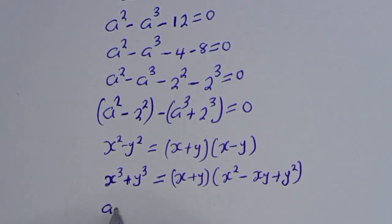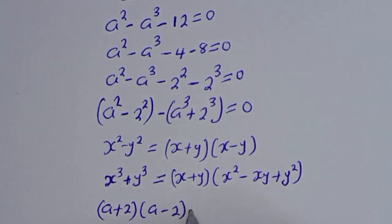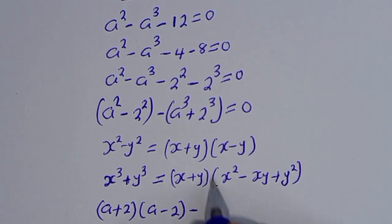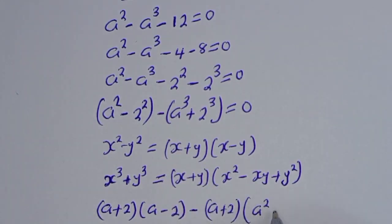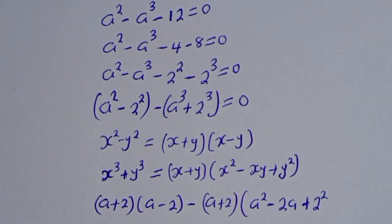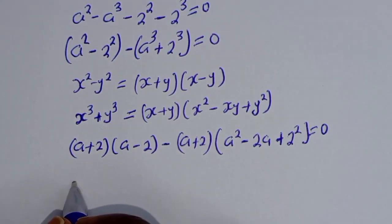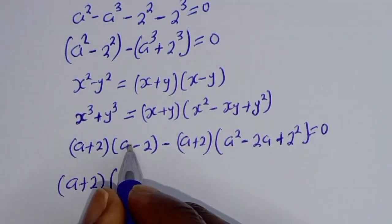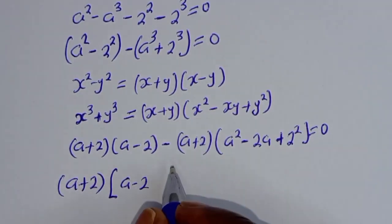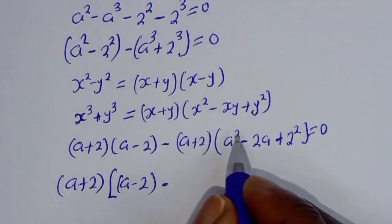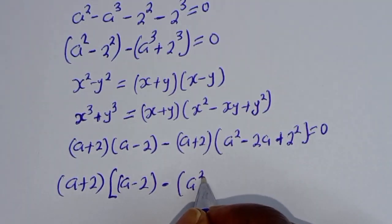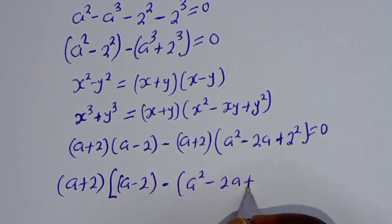Applying the difference of squares gives (a+2)(a-2). Applying the sum of cubes identity gives (a+2)(a squared minus 2a plus 4). So dividing out the groups yields (a+2)(a-2) minus (a+2)(a squared minus 2a plus 4) equals 0.